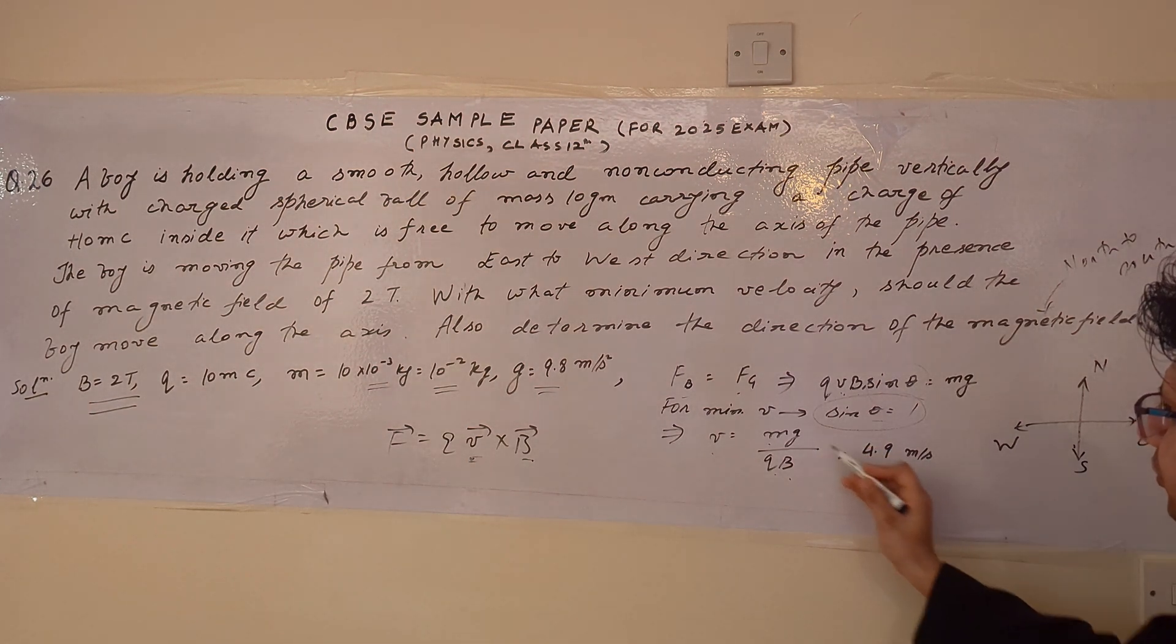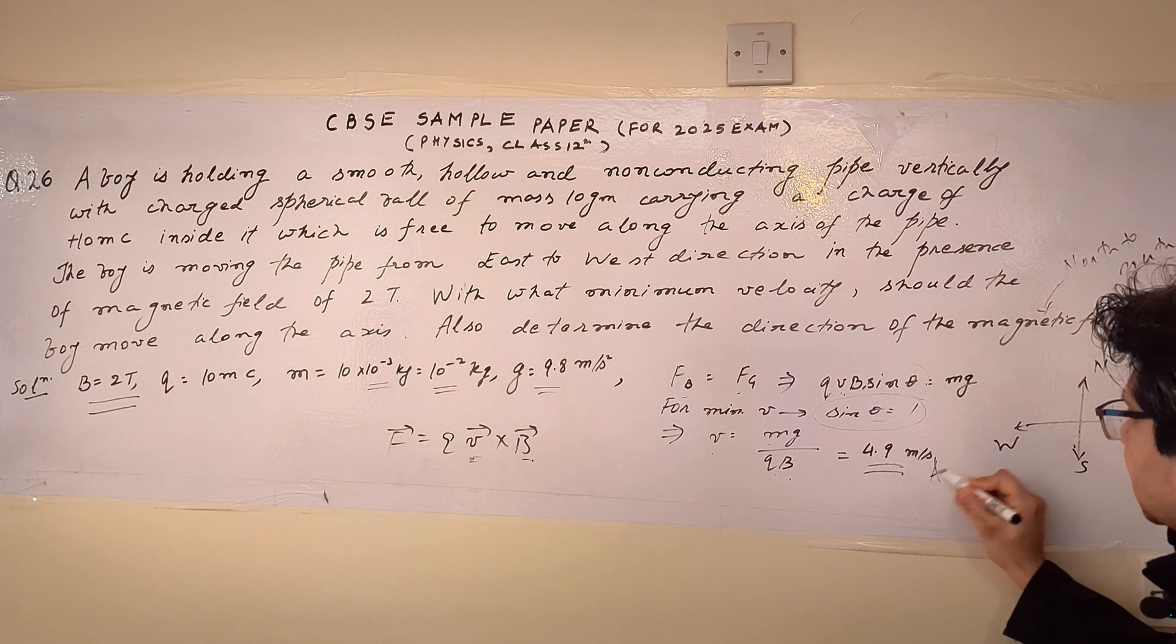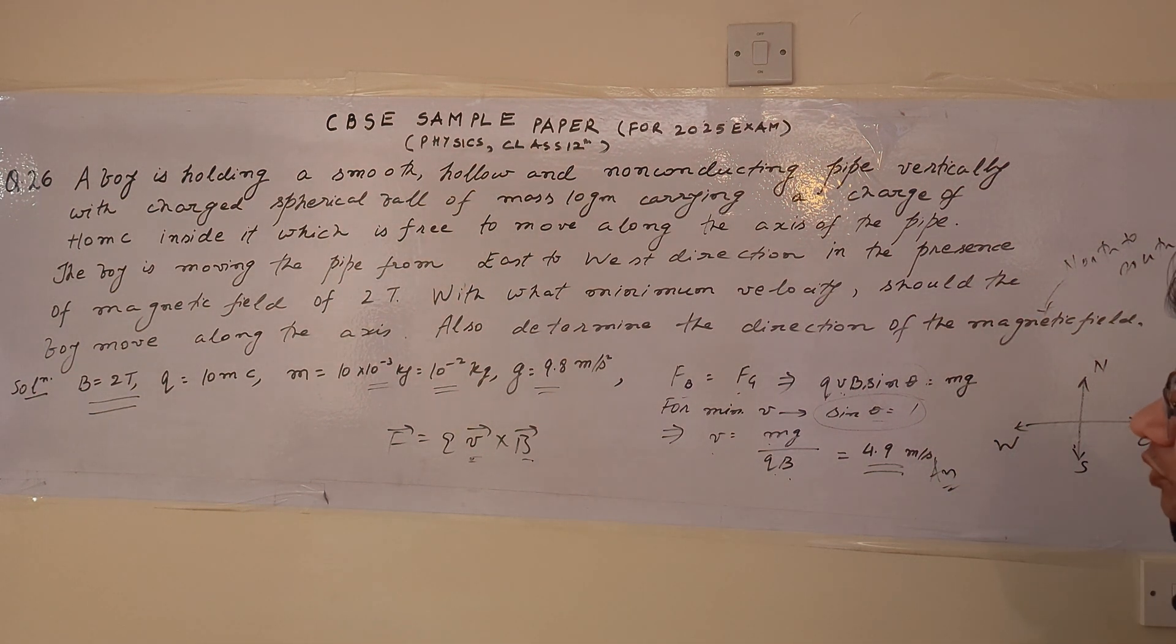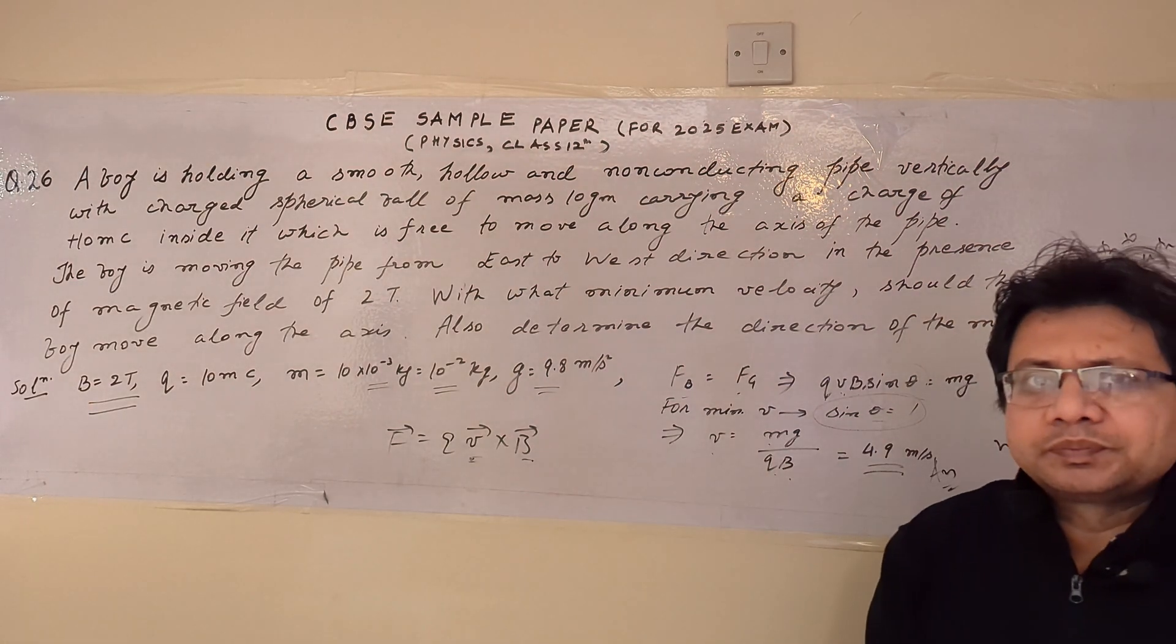Now putting the respective values of mg, Q and B in this particular equation we get the final value of V as 4.9 meter per second. So this is the answer of the first part of this particular problem. This is the solution of this particular problem. Thank you.